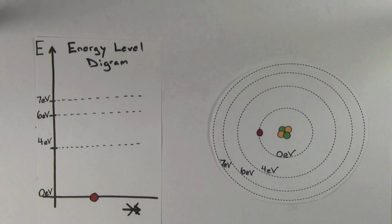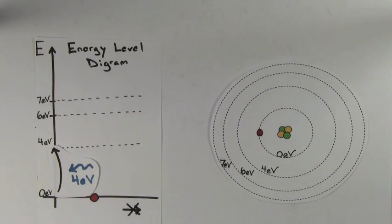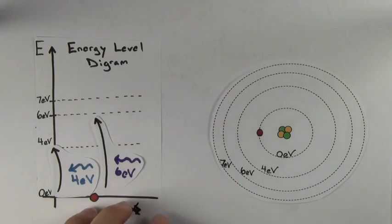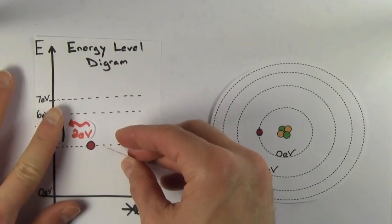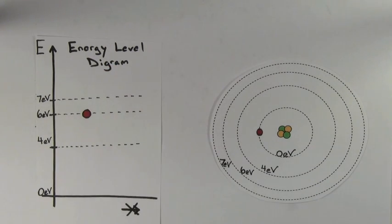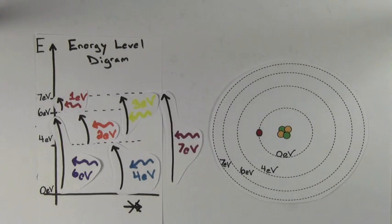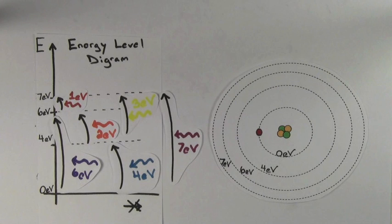So now we can figure out every possible photon this atom could absorb. If the electron is in the ground state, it could absorb a 4 eV, 6 eV, or 7 eV photon. If the electron is at the second energy level, also called the first excited state, it could absorb a 2 eV or 3 eV photon. And if the electron is at the third energy level, or second excited state, it could absorb a 1 eV photon. Those are the only photons this atom will absorb — 2.5 eV, 5 eV, and 6.3 eV photons will all pass straight through.